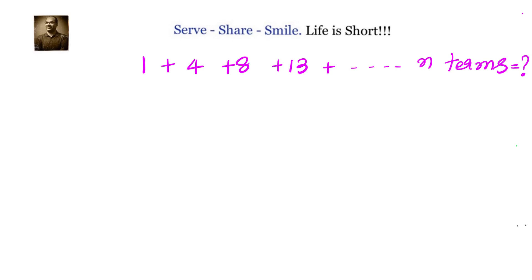But if you look at the differences of the consecutive terms, you have 3 here, then 4 here, then 5 here. These differences are in arithmetic progression. That means if you write down the series, shift it, and subtract them so that you can get the difference of the terms, then those differences are in AP.